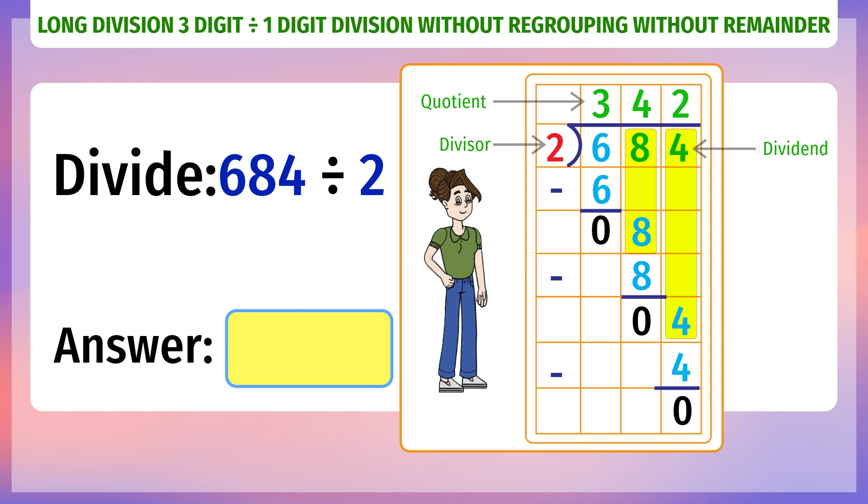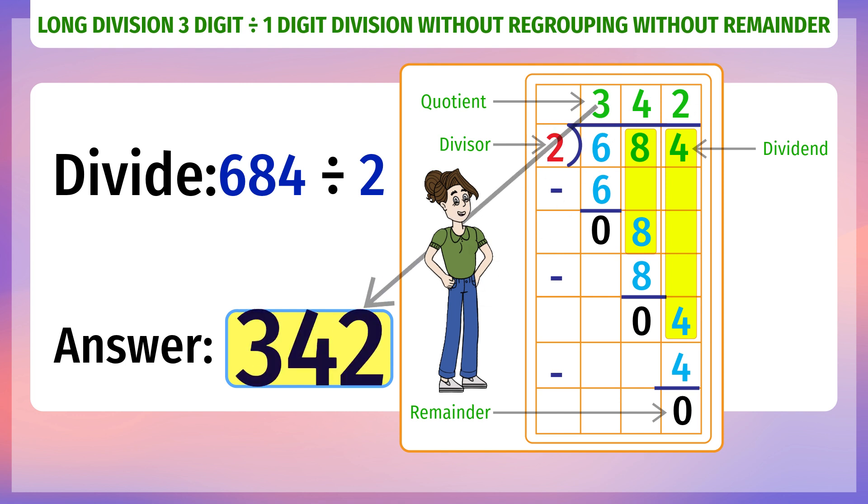Quotient is 342. Remainder is 0. 342 is the answer.